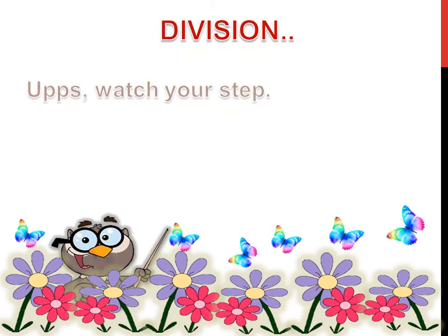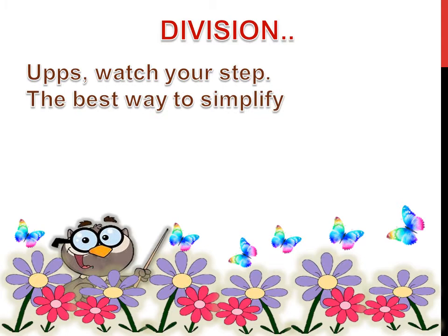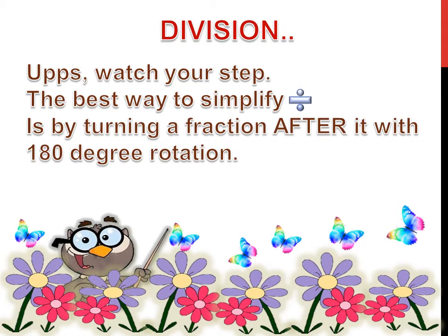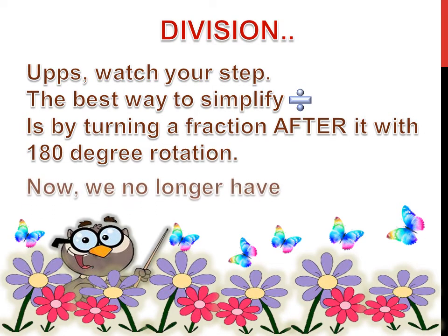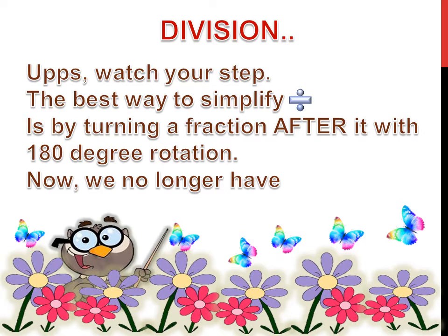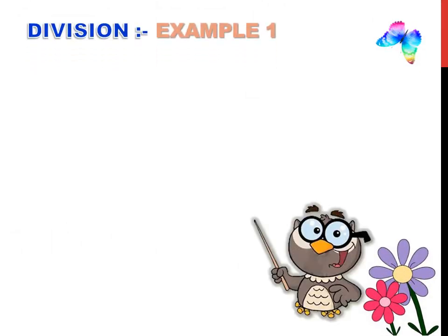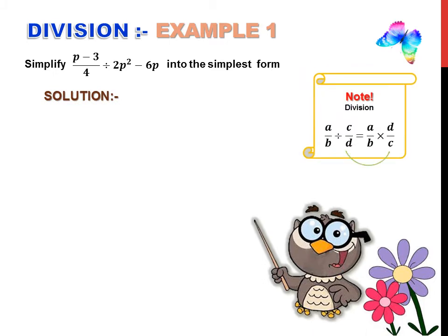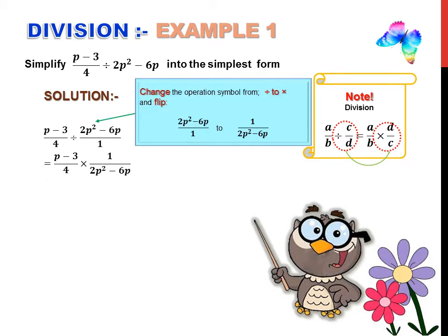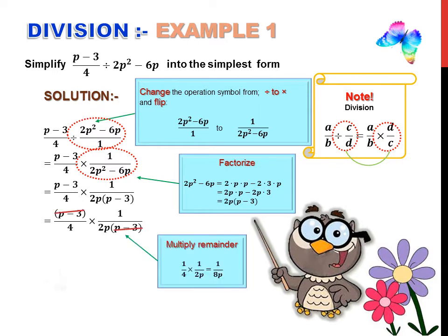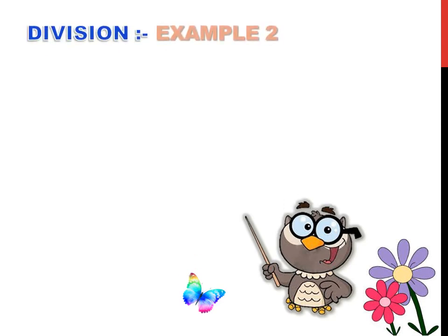Division — watch your step. The best way to simplify division is by turning a fraction after it with a 180-degree rotation. Now we no longer have a division because now it becomes a multiplication. Division Example 1. Division Example 2.